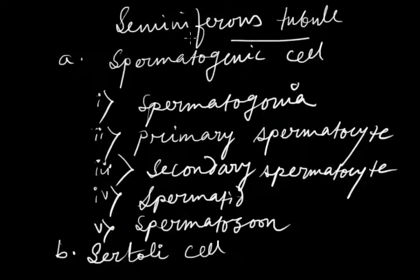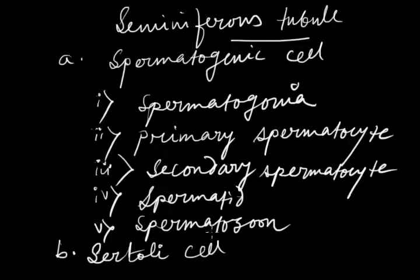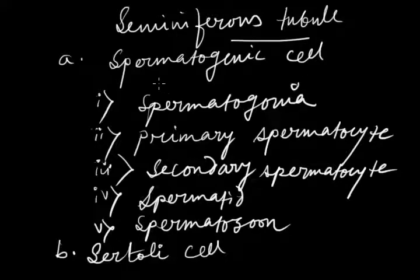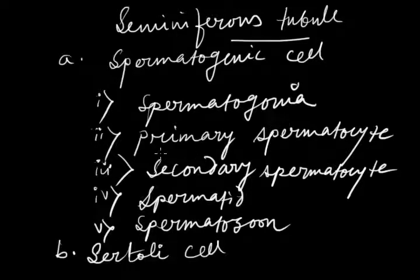The seminiferous tubule is composed of two types of cells: the spermatogenic cells and the Sertoli cells. Spermatogenic cells are actually sperm-producing cells, and they can be further divided into the following types: spermatogonia, primary spermatocyte, secondary spermatocyte, spermatid, and spermatozoa.